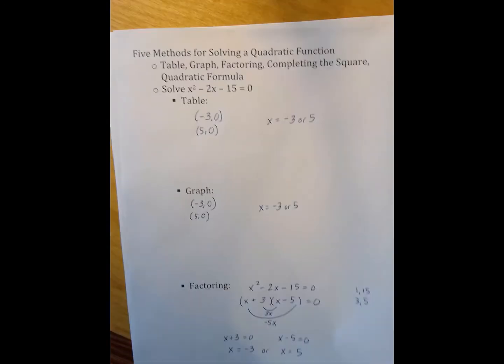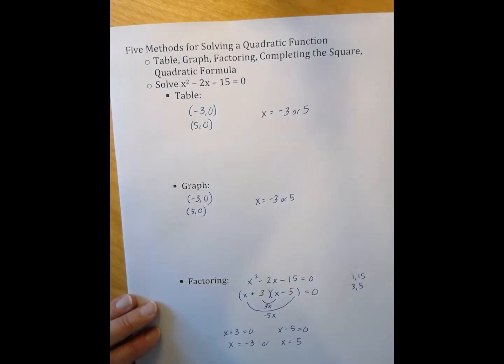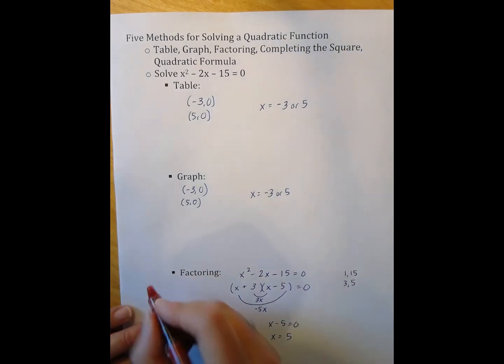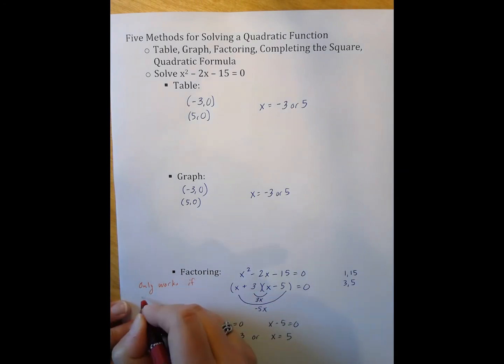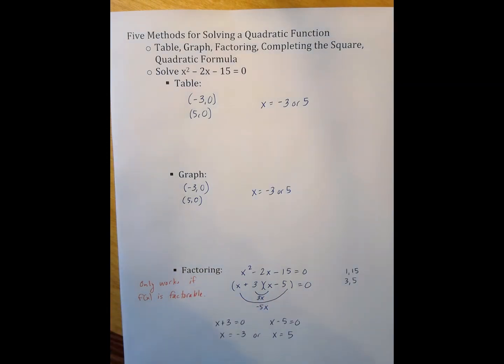And so generally I use the quadratic formula as like my last like I can't figure out any other method to use. Nothing else works out nicely so I'm going to have to pull out the formula and plug stuff in and just be very careful with my positive and negative signs. Factoring is the most kind of straightforward method but it only works if f of x is factorable.